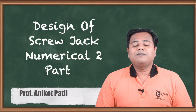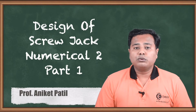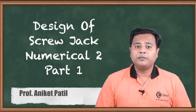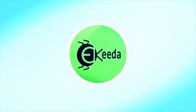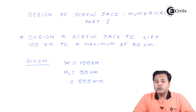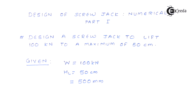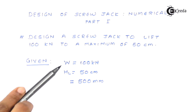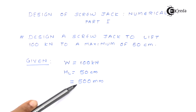Hello friends, welcome back to the subject of Machine Design 1. We are about to solve the second numerical on screw jack design. The problem statement is: design a screw jack to lift a 100 kN load to a height of 50 cm. So the given data is: weight = 100 kN, height of lift = 50 cm, which we convert to 500 mm.